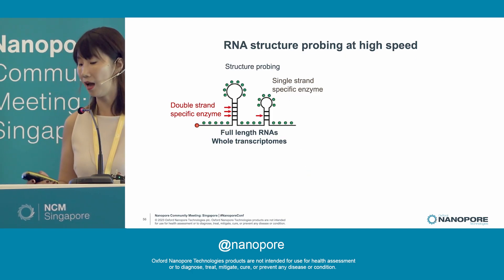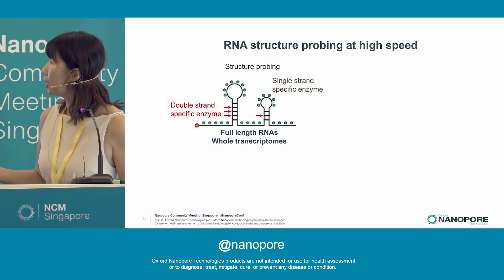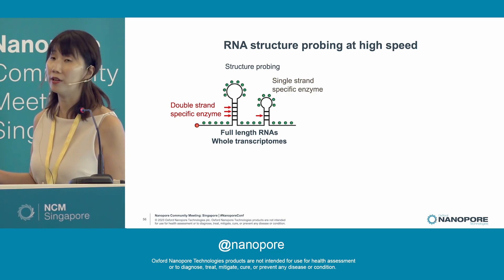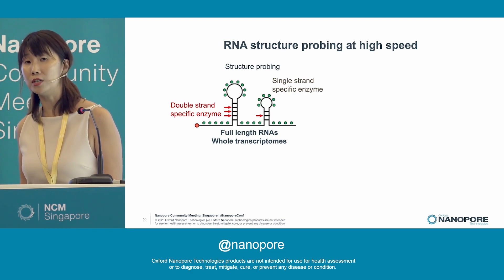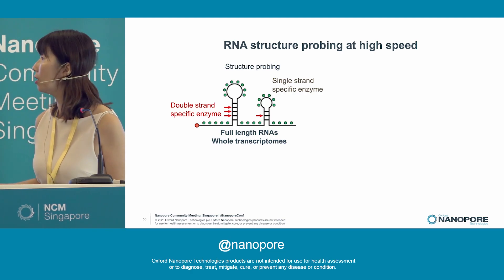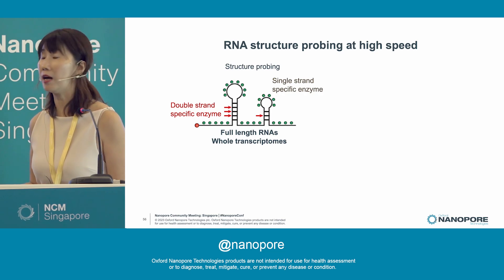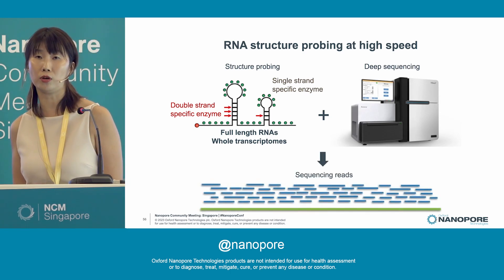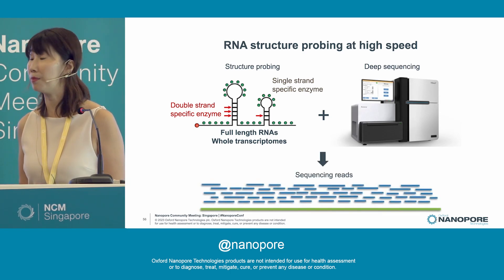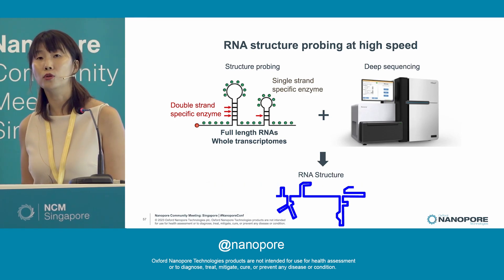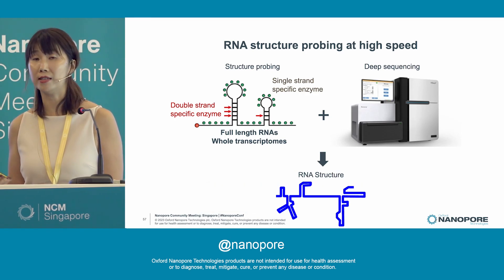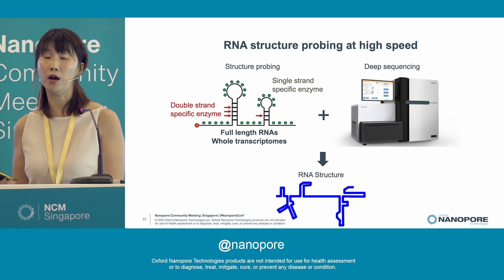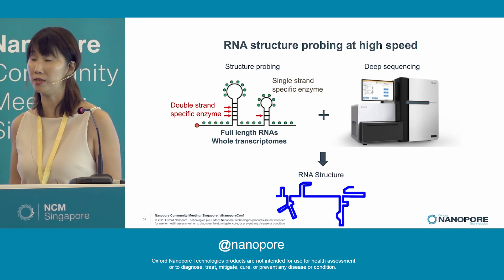Traditionally, to understand how an RNA folds, we can use a variety of chemical probes that can modify double or single-stranded regions along RNA, and then do capillary sequencing to read out where these regions are. Over the years, we and many other groups have coupled this biochemical footprinting together with deep sequencing to read out RNA secondary structures for thousands of RNAs at one time, enabling us to look at RNA structures of entire transcriptomes and how they change across different biological organisms as well as disease states.